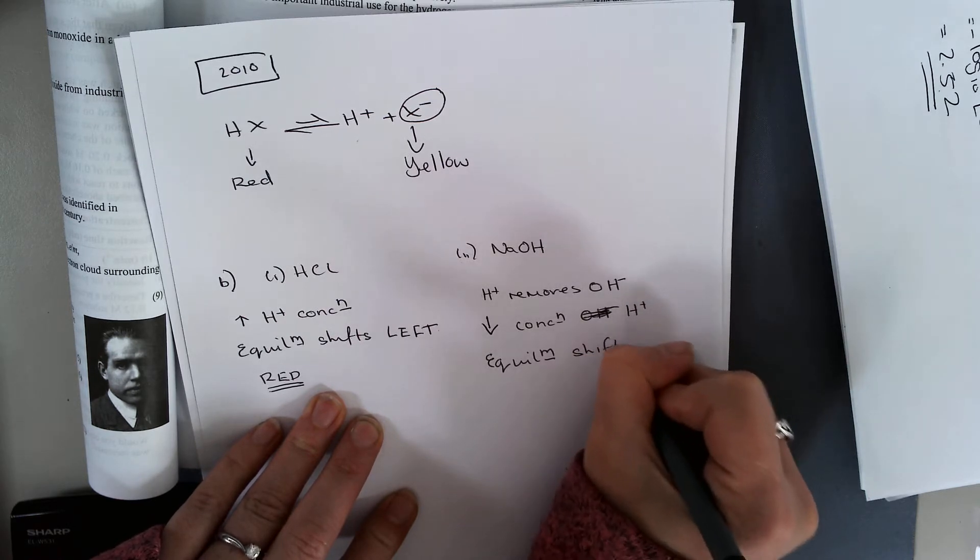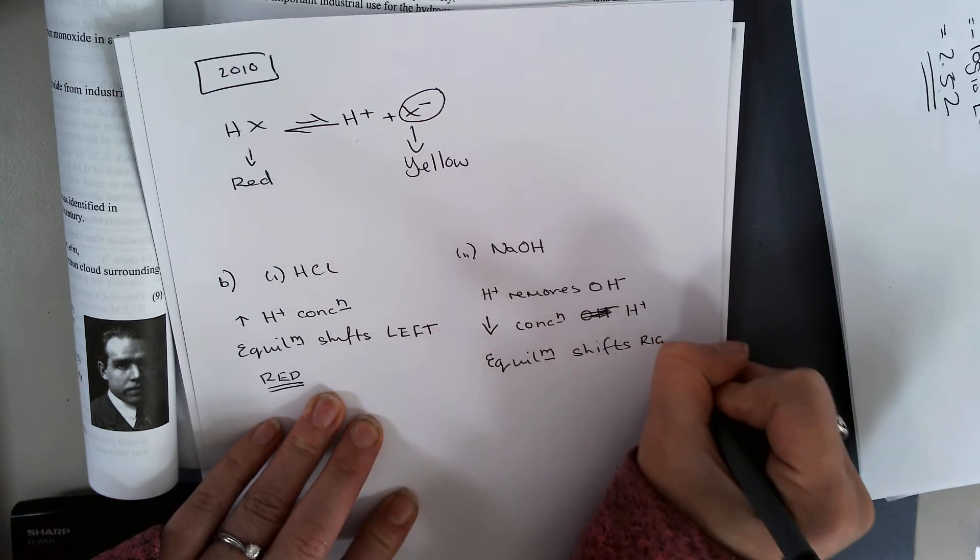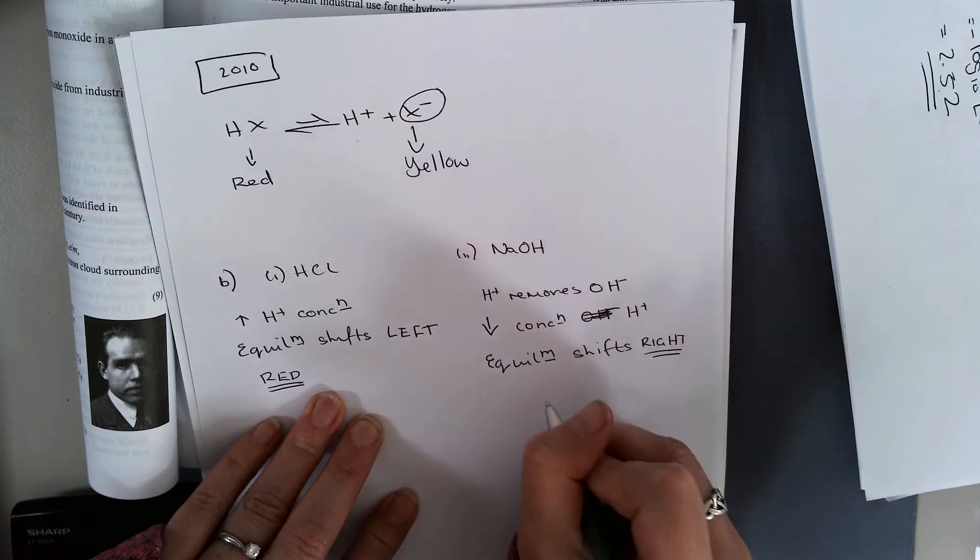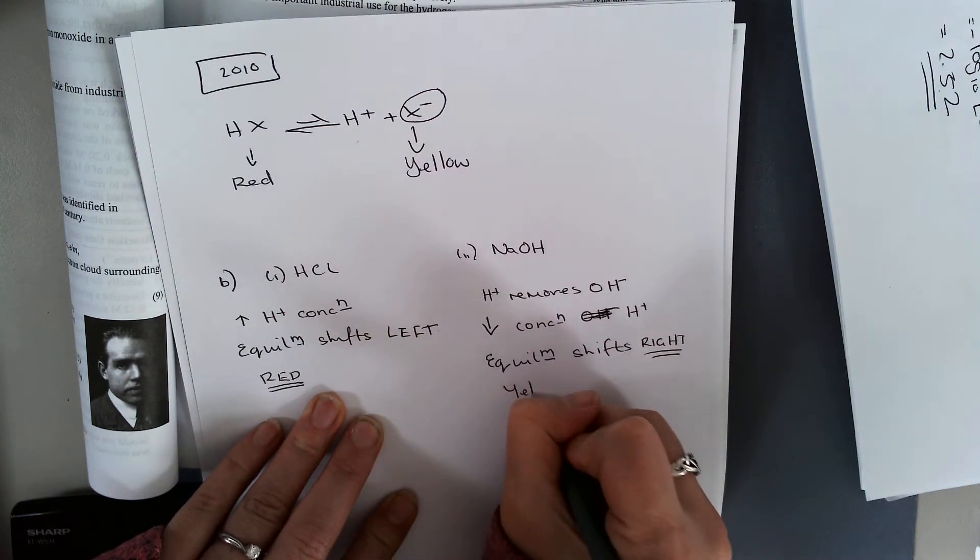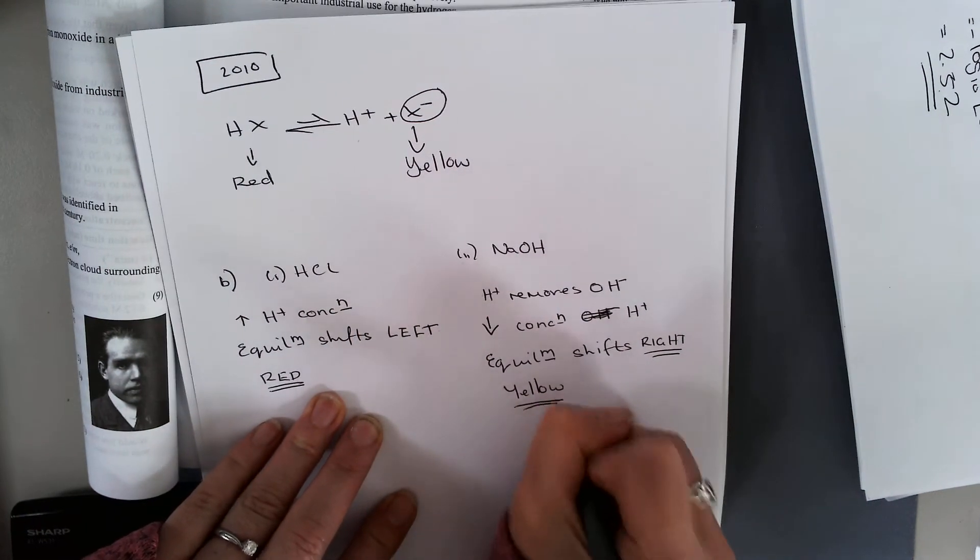My equilibrium is going to shift in the direction to replace those H plus. Equilibrium shifts right. My color there is yellow.